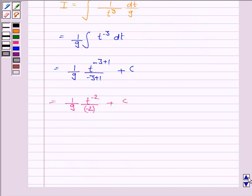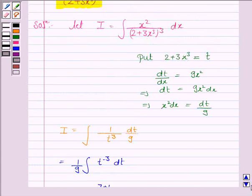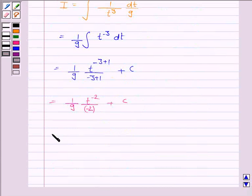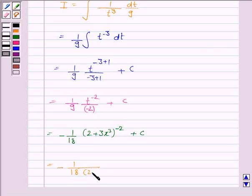Now t is 2 plus 3x cubed, so substitute it. We have minus 1 by 9 into t to the power minus 2 plus c, which is again equal to minus 1 upon 18 into 2 plus 3x cubed whole square plus c.